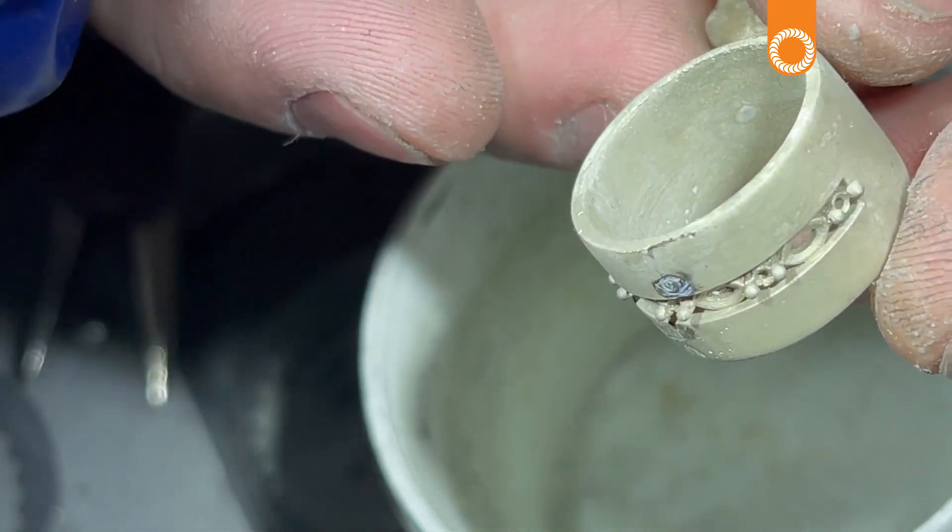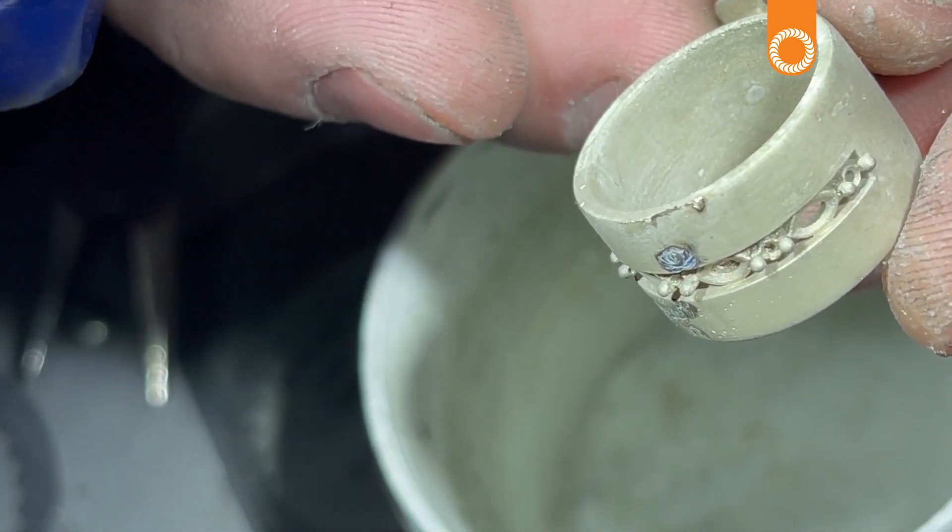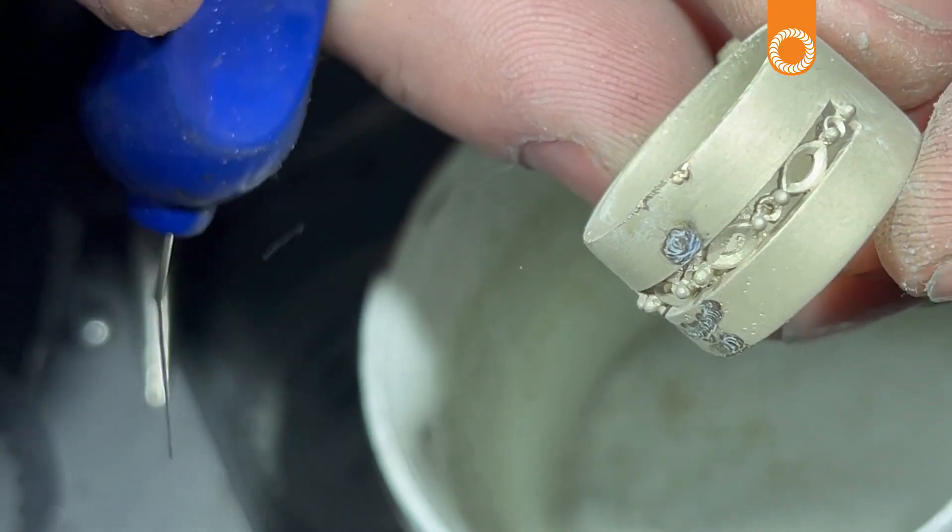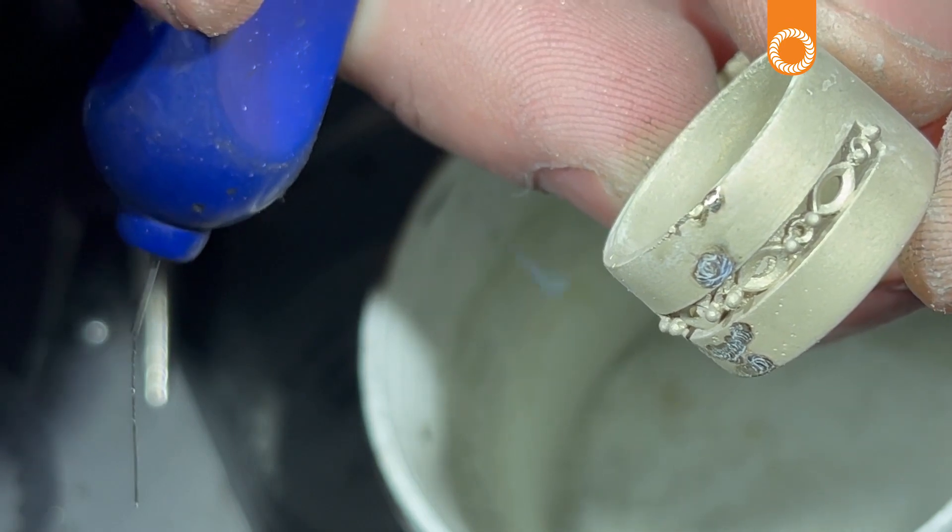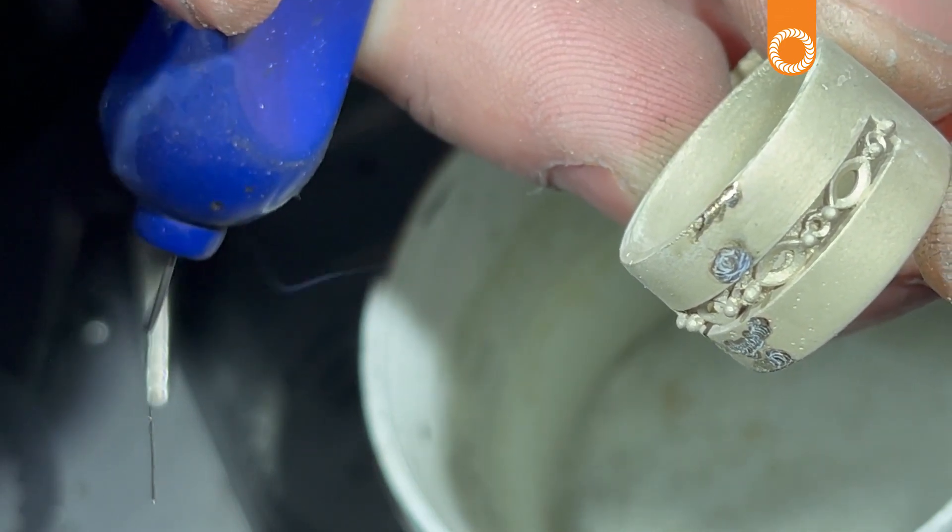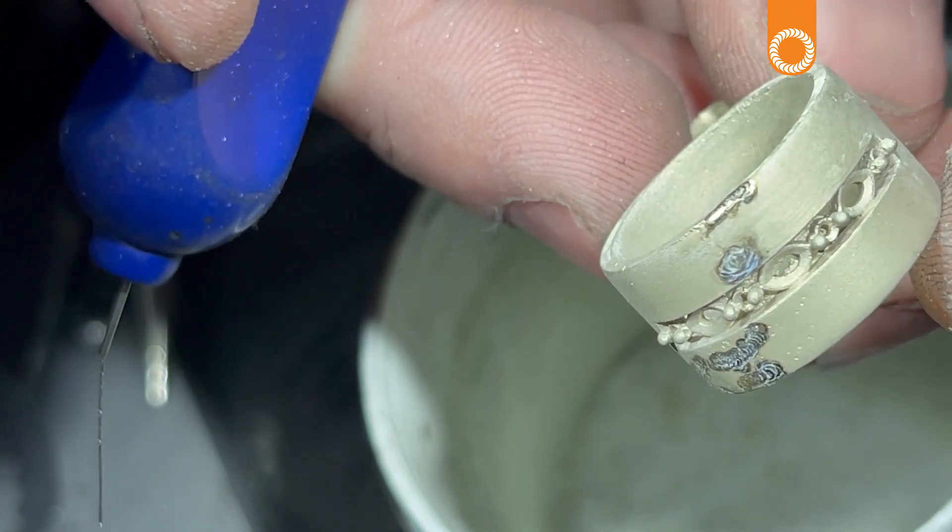Now this part you're seeing here, instead of filing off that gold, I can just melt that right back into the ring and eliminate some of that gold loss.